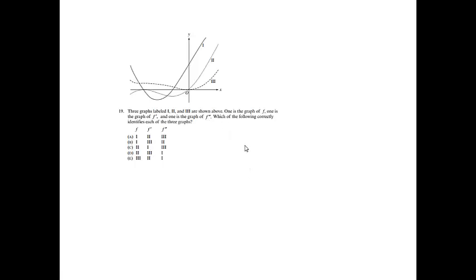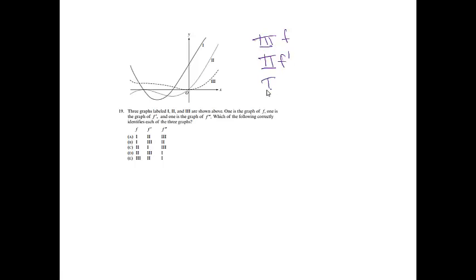Number 19. Three graphs labeled 1, 2, and 3 are shown. One is a graph of F, one of F prime, and one of F double prime. Which correctly identifies each? When looking at this, I tried to look for points of inflection and where things were going up and down. Graph 3 had the most curves, 2 had fewer, and 1 had even less. So I guessed: let 3 be F, 2 be F prime, and 1 be F double prime, and let's verify.